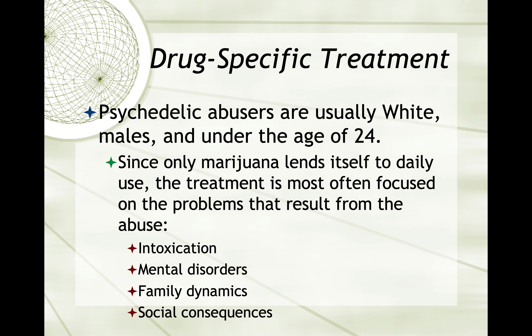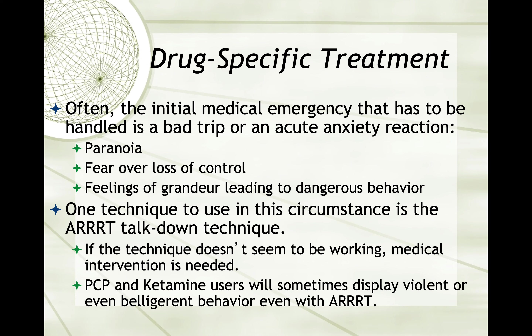Psychedelic abusers are usually white males under the age of 24. Since only marijuana lends itself to daily use, treatment is most often focused on the problems that result from the abuse: intoxication, mental disorders, family dynamics, and social consequences — why did you start smoking marijuana, and why did you smoke it in such large quantities? Often the initial medical emergency that has to be handled is a bad trip or an acute anxiety reaction, which causes paranoia, fear over loss of control, and feelings of grandeur, leading to dangerous behavior. One technique to use in this circumstance is the ARRRT talk-down technique. If the technique doesn't seem to be working, medical intervention is needed. PCP and ketamine users will sometimes display violent and even belligerent behavior even with ARRRT.